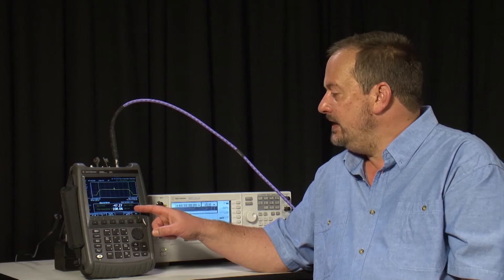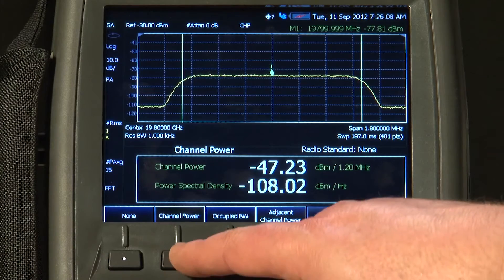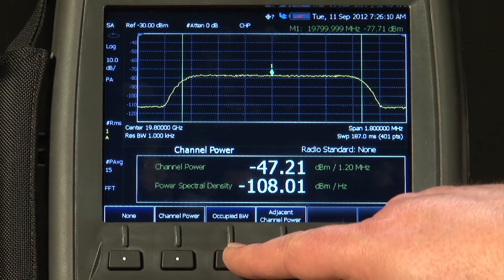If you are not sure what the channel power is of the signal that you are measuring, let us just go back to the channel measurements again, and this time I will select Occupied bandwidth.